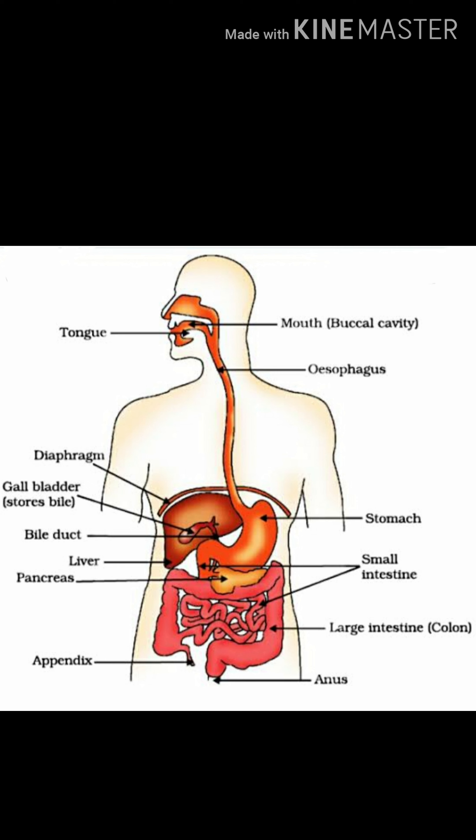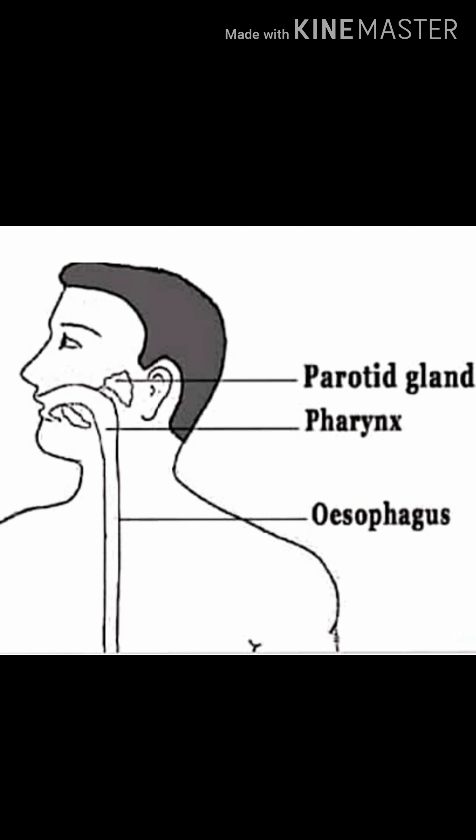The digestion process starts in the mouth and ends at the anus. So let's see how this process actually takes place. When we eat something, our mouth starts watering. Why does it water? It actually doesn't water — it's the fluid secreted by the salivary glands called saliva. It contains amylase, which helps in breaking down food into starch or into simple sugar.